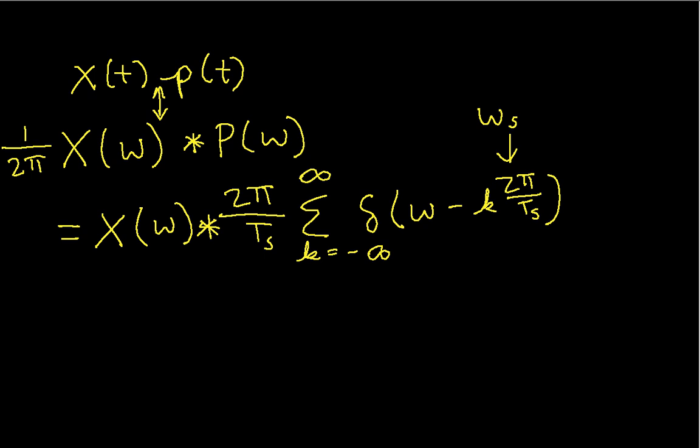You'll notice that I also forgot my 1 over 2 pi out here. Okay, now I think we've got everything that we need. Convolution is a linear operator, which means that I can, since I have a constant out here and a constant out here, those two guys will cancel, and I'm left with 1 over t sub s.